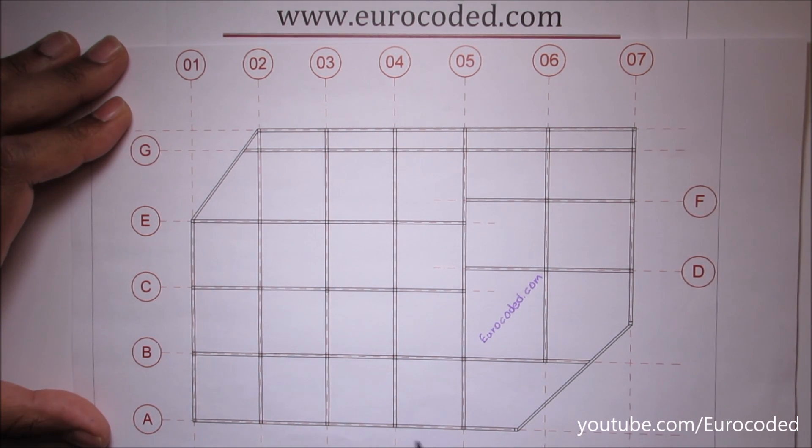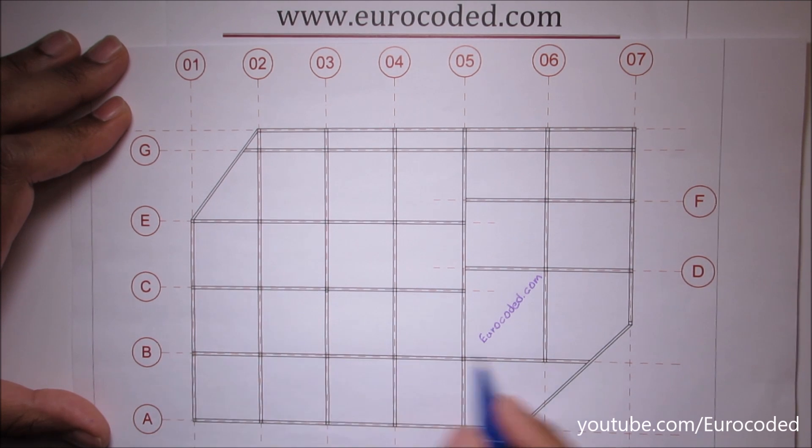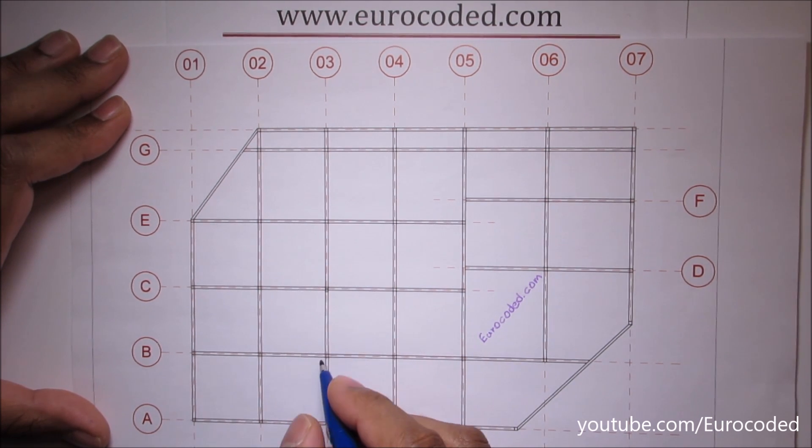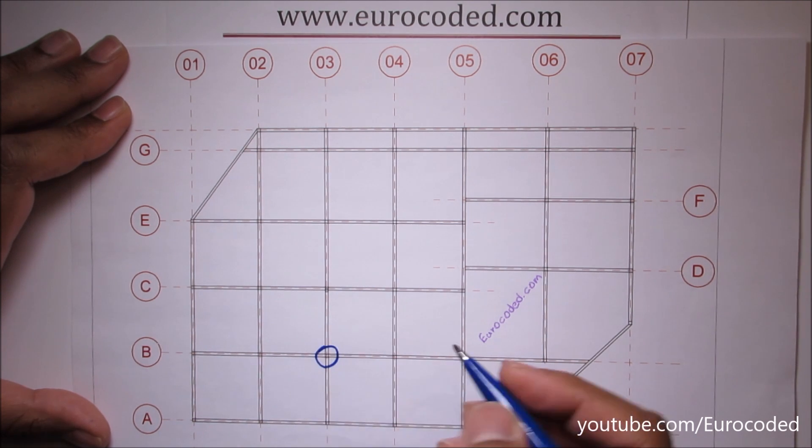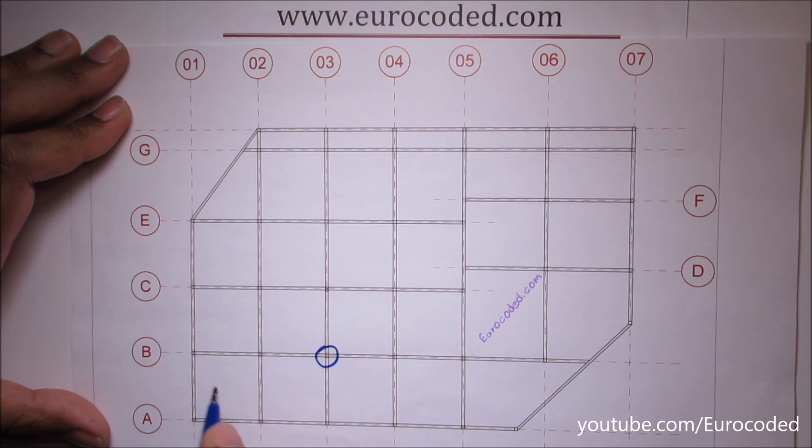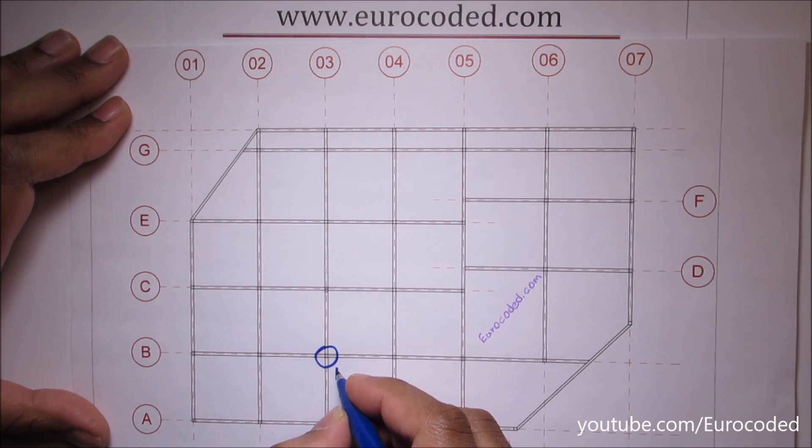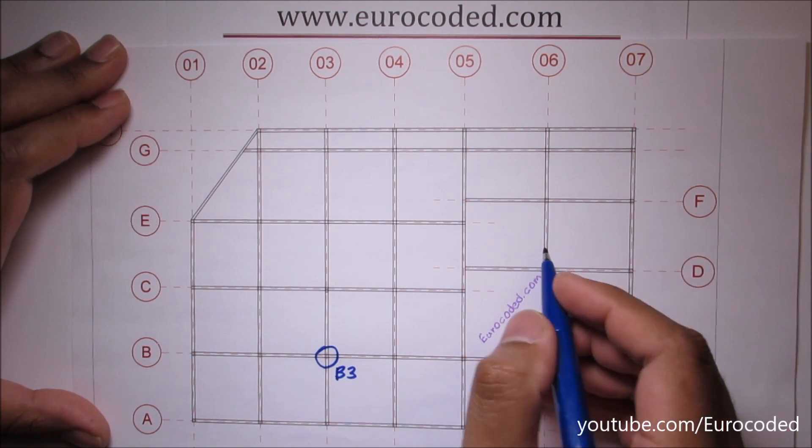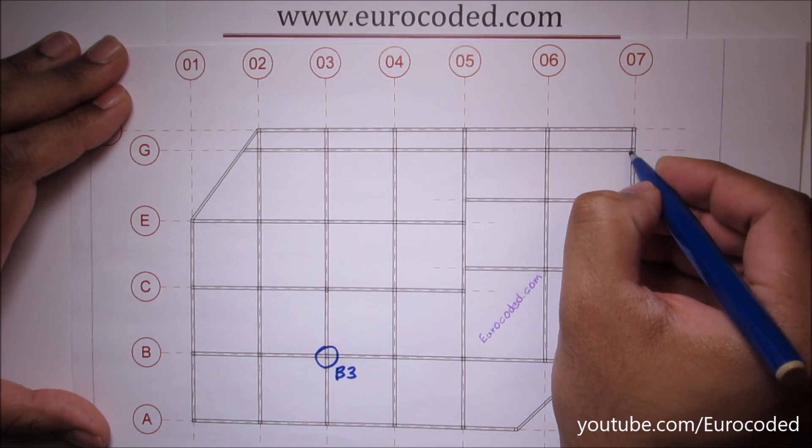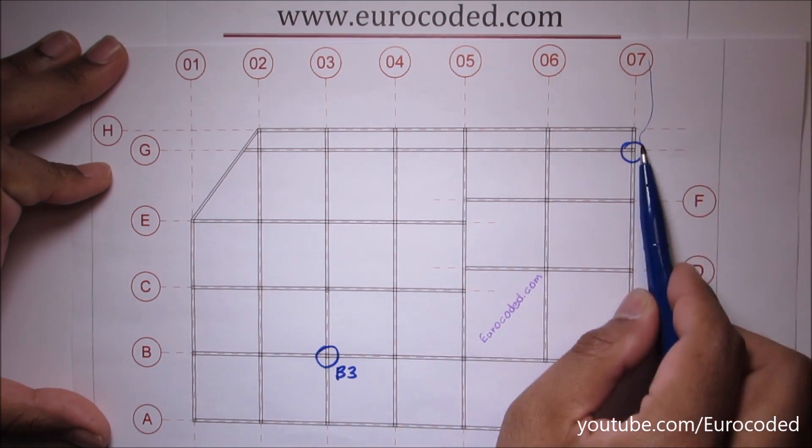When you want to number your columns using this grid reference system, I can show you an example in here. These two grid lines are intersecting and there is a column located at that location and we can use B and 3. This column would be numbered as B3. Another example, if you take this location, this column would be G7.